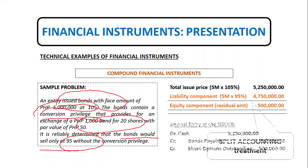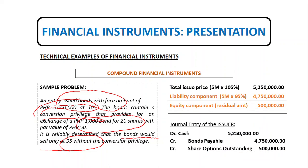For the journal entry, since it is a receipt of cash, we debit cash 5,250,000, then credit bonds payable — since it is the entity who issued the bond, it is their liability — amounting to 4,750,000 pesos, which is the liability component itself. The difference is the equity component, so we credit share options outstanding. IAS 32 notes that the equity component of a convertible bond is the embedded option to convert the liability into equity of the issuer.